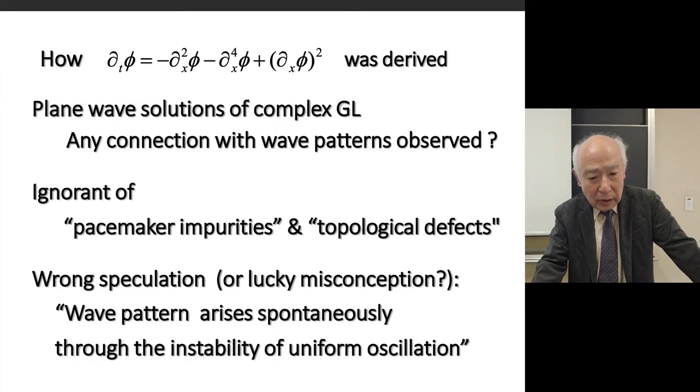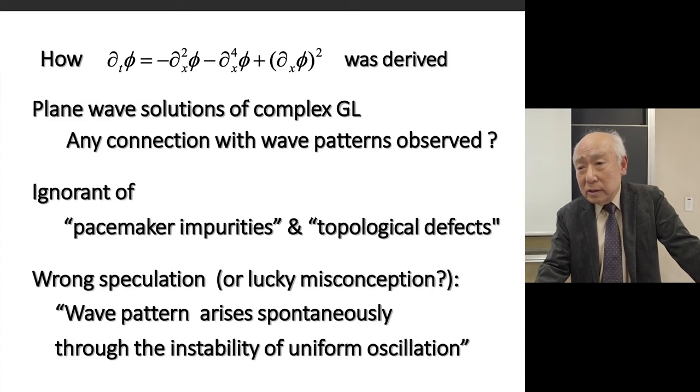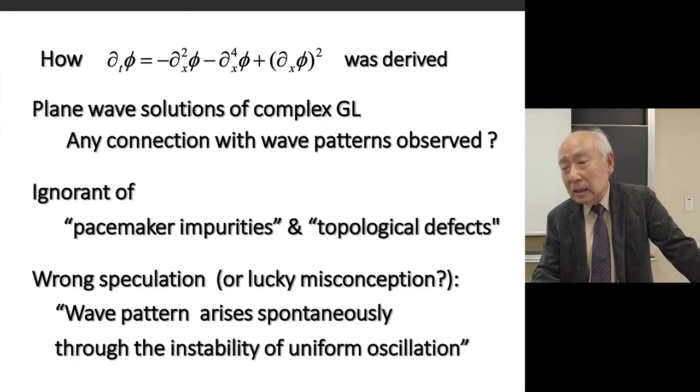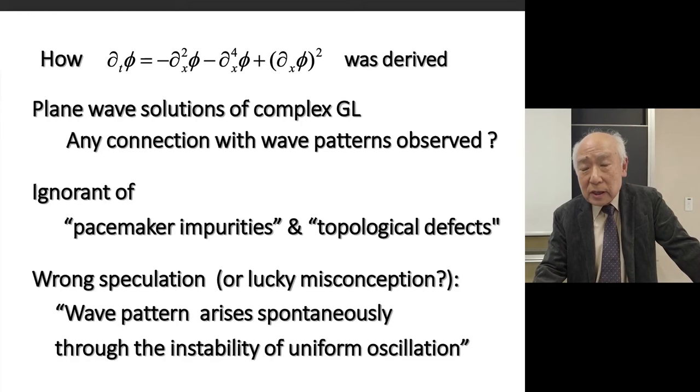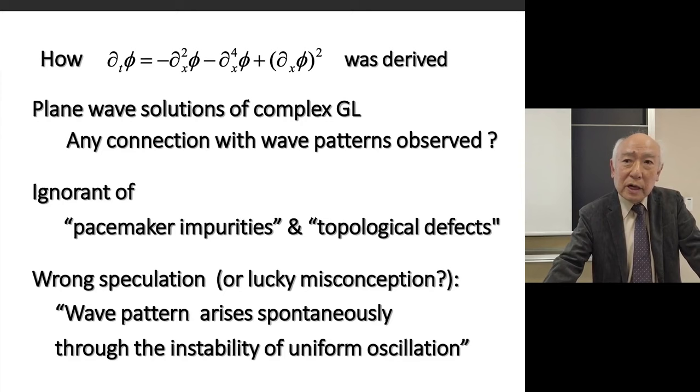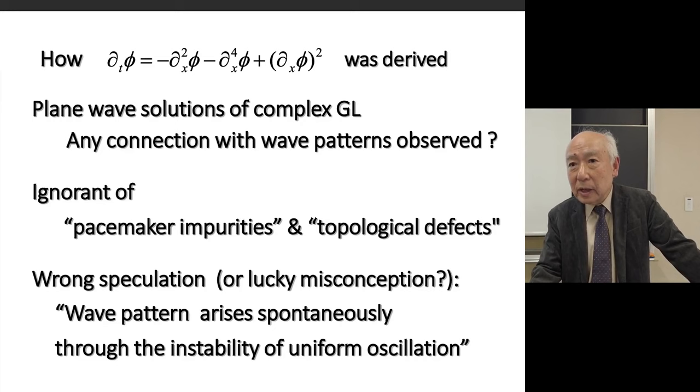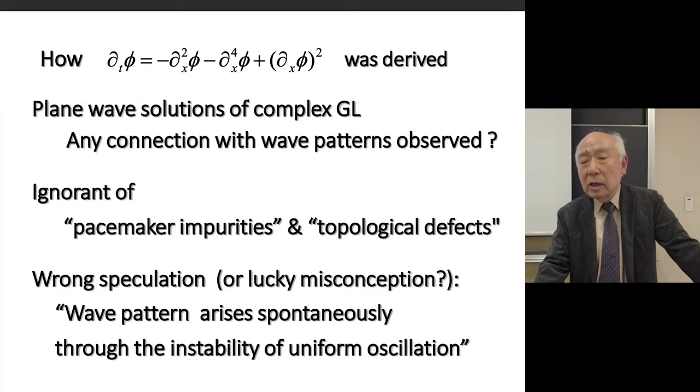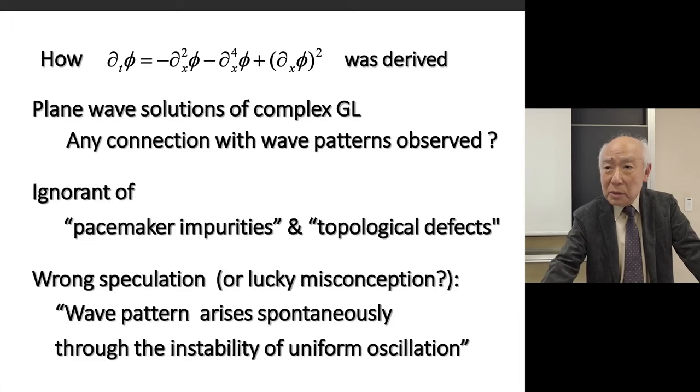In retrospect, however, this misconception may have been a lucky misconception, because this finally led me to the discovery of the equation called by my name and Sivashinsky. The Ginzburg-Landau or complex Ginzburg-Landau equation derived before certainly showed this kind of instability, which is now called the Benjamin-Feir instability. And the parameter condition for the instability was also satisfied by the Brusselator which we were dealing with. So I was really eager to know what happened after the instability.